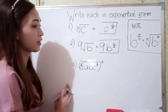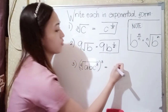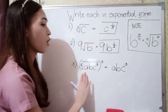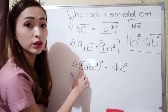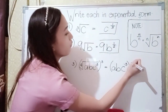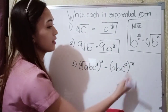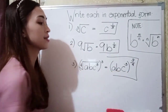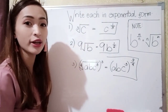For number 3, our base is our radicand: a, b, c, cubed. Since they are all raised to the third power and all under the fourth root, we use a grouping symbol. Our denominator is the index 4, and our numerator is the power 3. So the answer for number 3 is the quantity (abc) cubed, raised to 3 over 4.